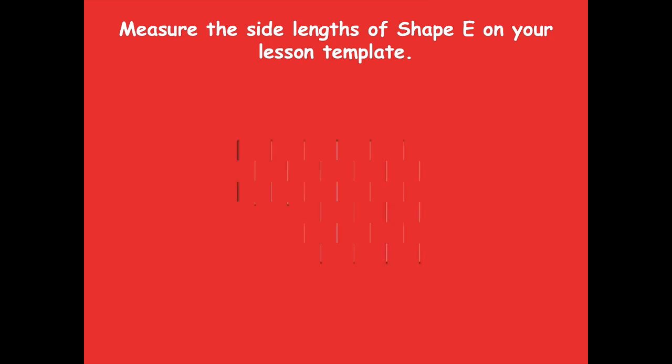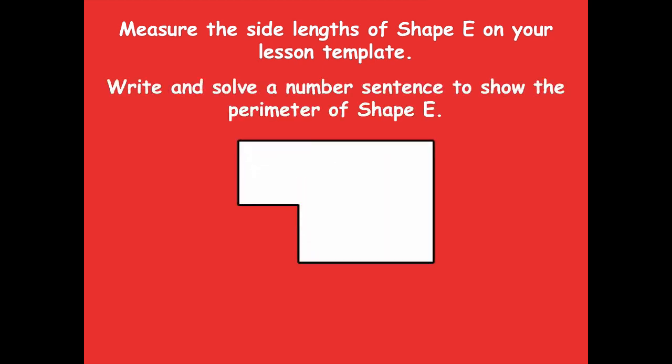Now we're going to measure the side lengths of shape E on your lesson template and write and solve a number sentence to show the perimeter. Here's a tricky thing to be cautious about: we're used to measuring the outside, but there's a part that's kind of cut out in the shape. Those are two separate measurements, so make sure you measure both of those sides. Each of those yellow lines should have its own measurement. Pause the video, measure the side lengths, write a number sentence, and solve to show the perimeter of shape E.